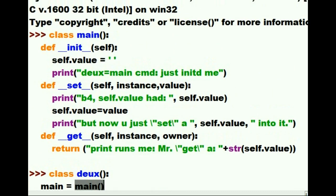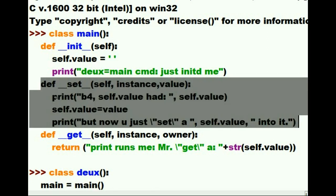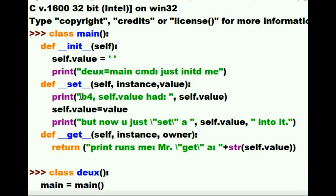That will trigger the execution of this method. It will say now print before self.value had, and a blank, because we didn't have anything in it, because it just initialized it. And then we'll take value, the value that gets automatically passed to the double underscore set method, and it will assign that to the local variable self.value. Then the third statement here says,